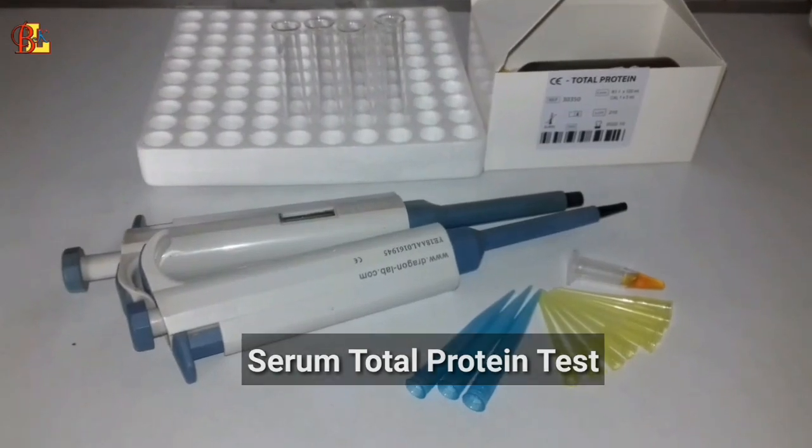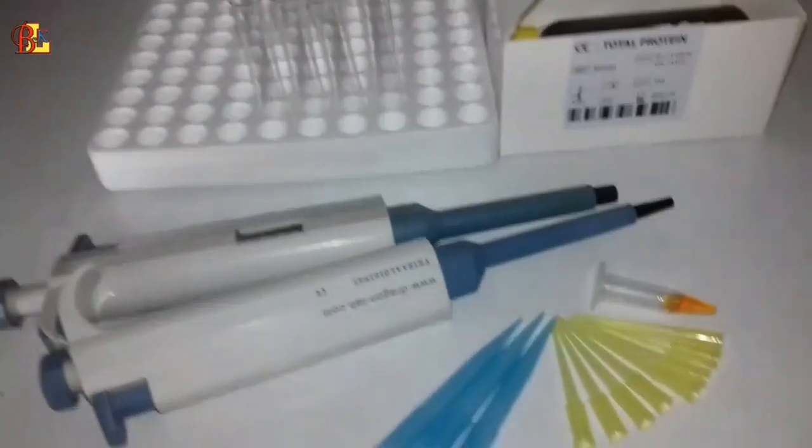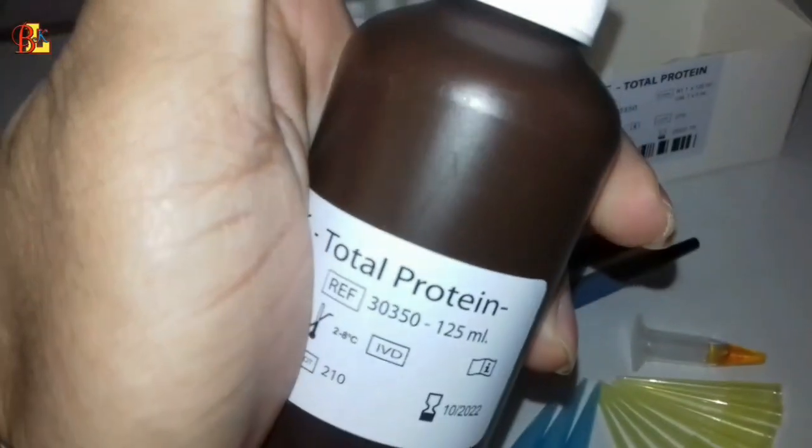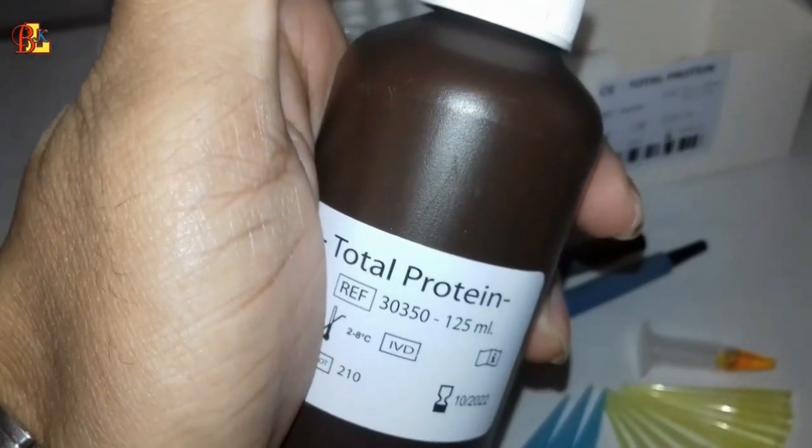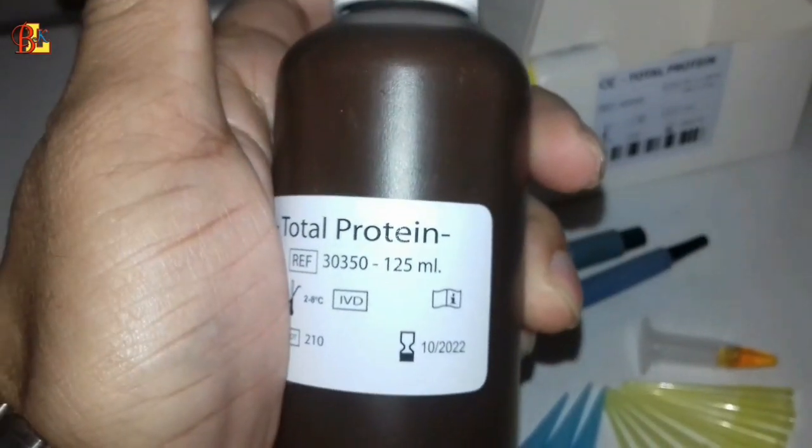We will do this total protein test with the equipment you are seeing right now. These are the instruments: test tubes, micropipette tips, and reagent. The thing you see in my hand right now is the total protein reagent.